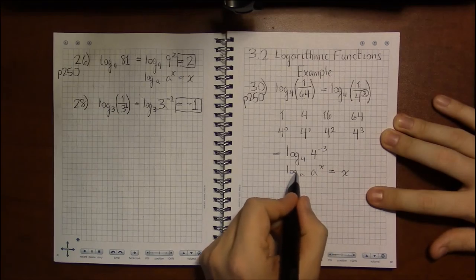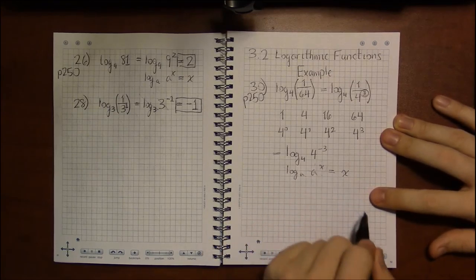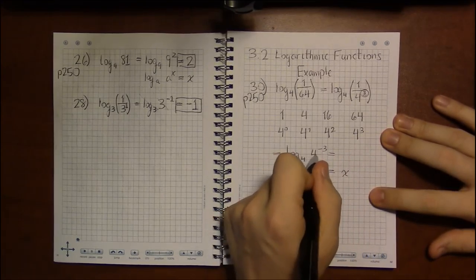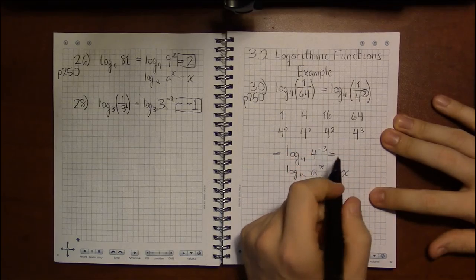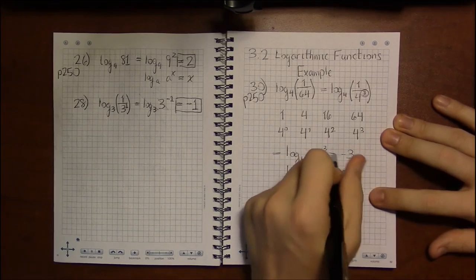According to log properties, the log and the exponential cancel each other out, leaving me with the exponent. So the log base 4 and the 4 to whatever are going to cancel and leave me with this whatever. And in this case, that is minus 3.